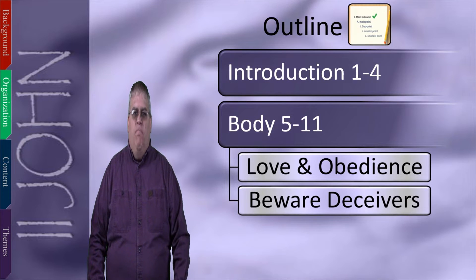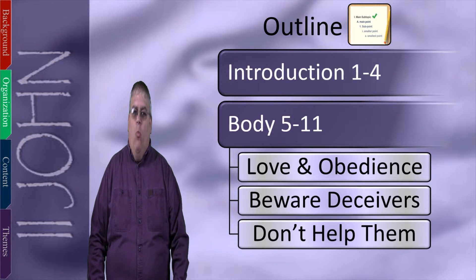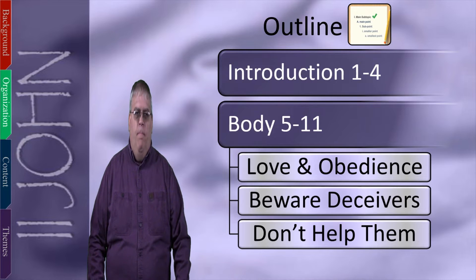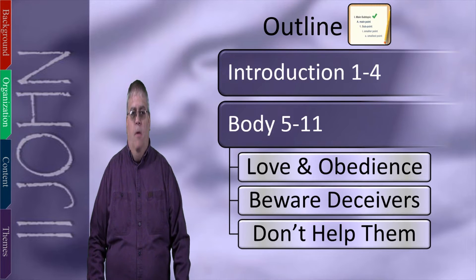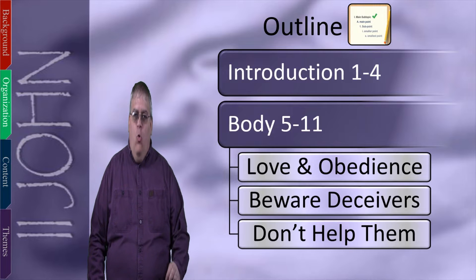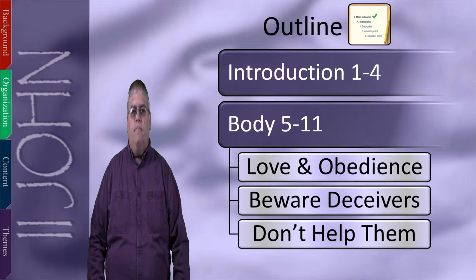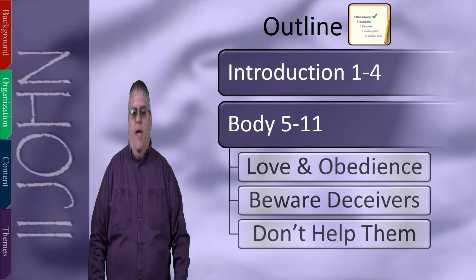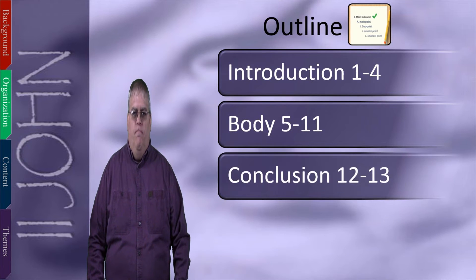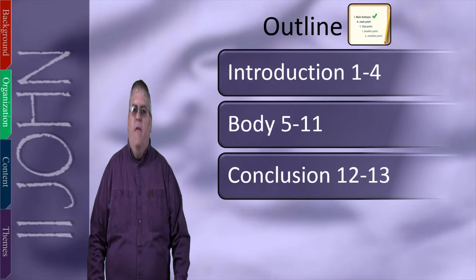In the last subsection, John told them what to do if a deceiver approached them. He said do not receive or help them, because whoever greets a false teacher partners with him in his evil works. And this book ends with a standard conclusion. John told of his intended visit to them and then gave a final greeting. That's the organization of this book.